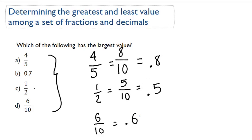So I have 0.8, 0.5, 0.6, and 0.7. Which is the largest value? 4 fifths is the largest value because 4 fifths is the same as 0.8, which is the largest decimal.